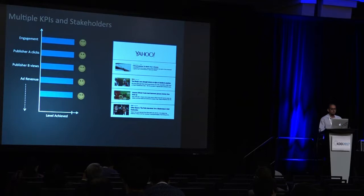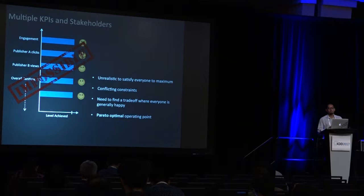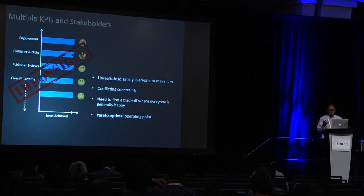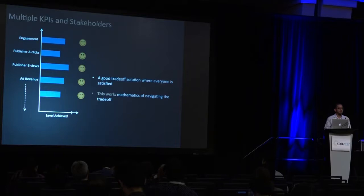If you're going to measure these KPIs on a scale of 0 to 10, in an ideal world you'd like to score 10 out of 10 on all of them. But in practice this is impossible because there are trade-offs. If you have two different publishers you're both trying to satisfy, there's a fundamental trade-off: doing well for publisher one means compromising on publisher two. So there are conflicting constraints and you generally need to find a Pareto optimal point where everyone is somewhat happy.